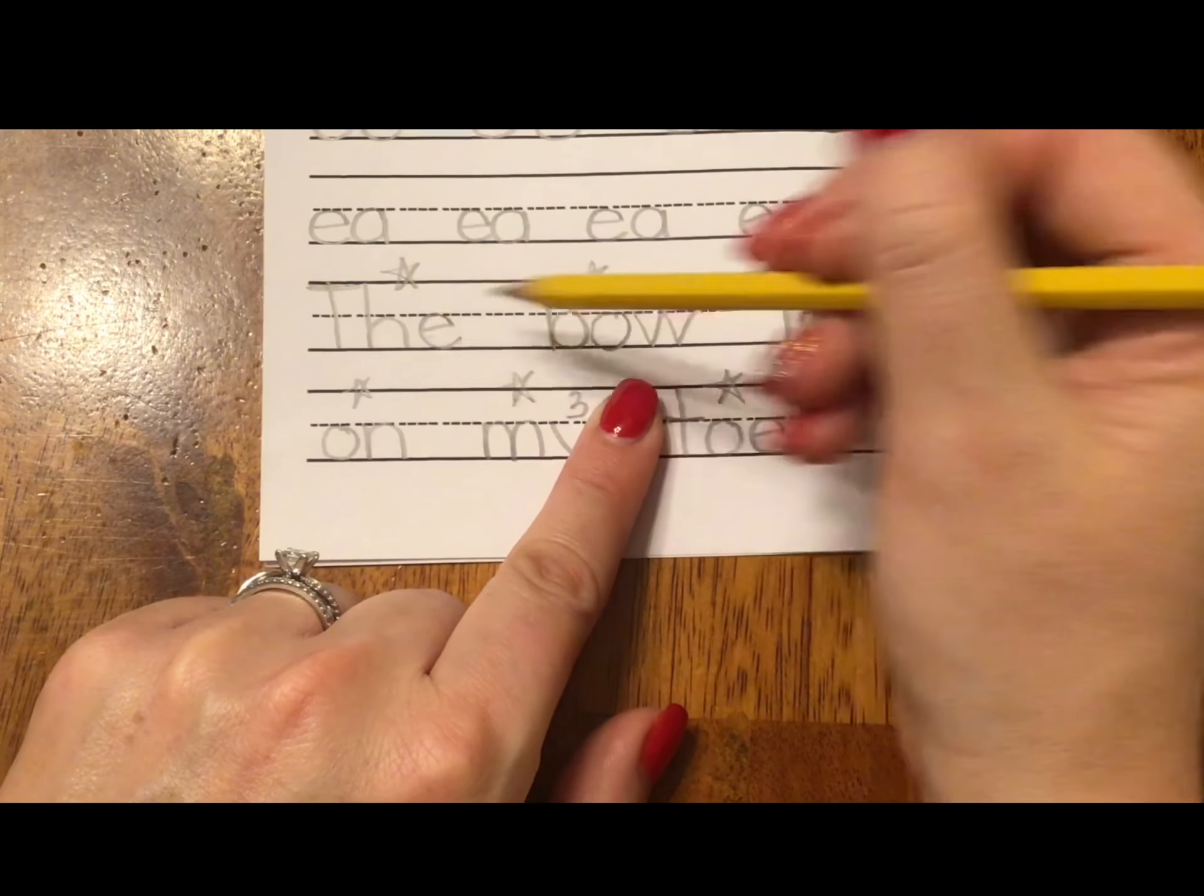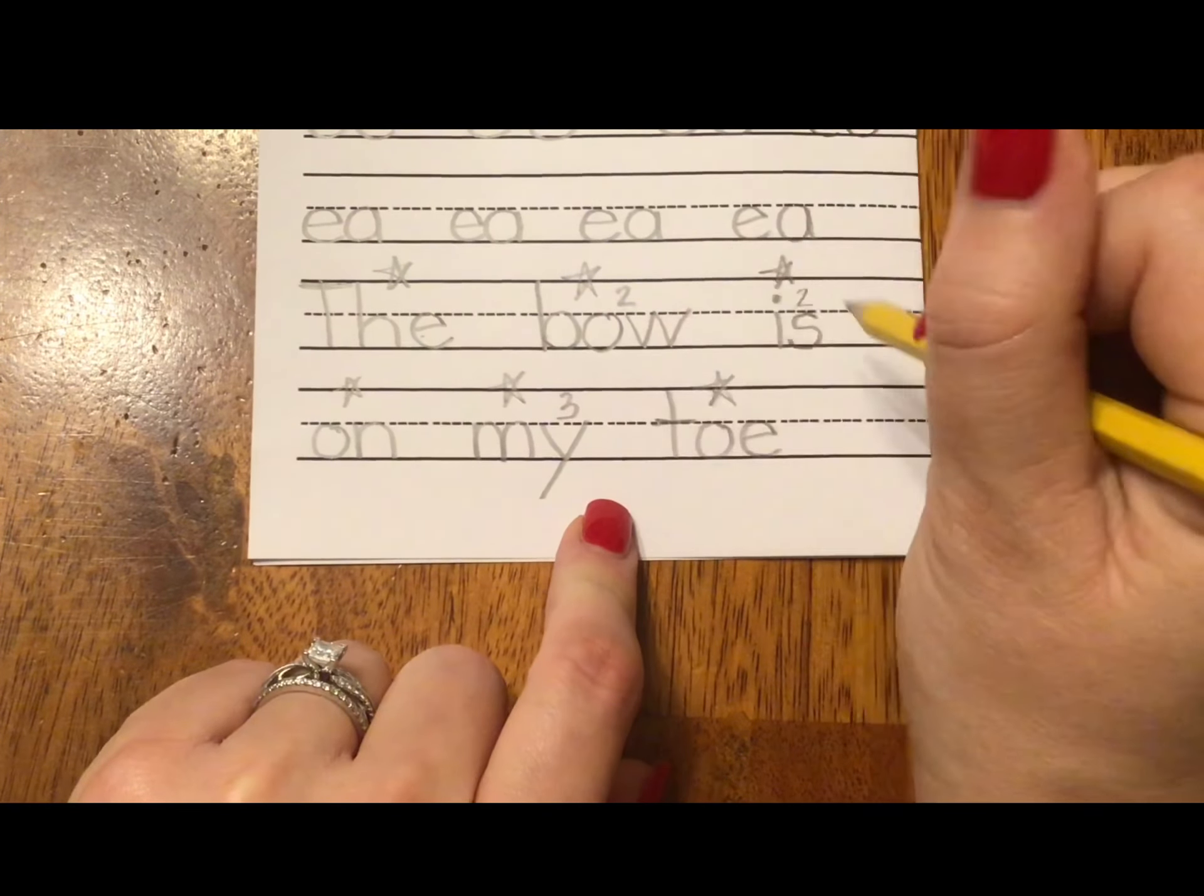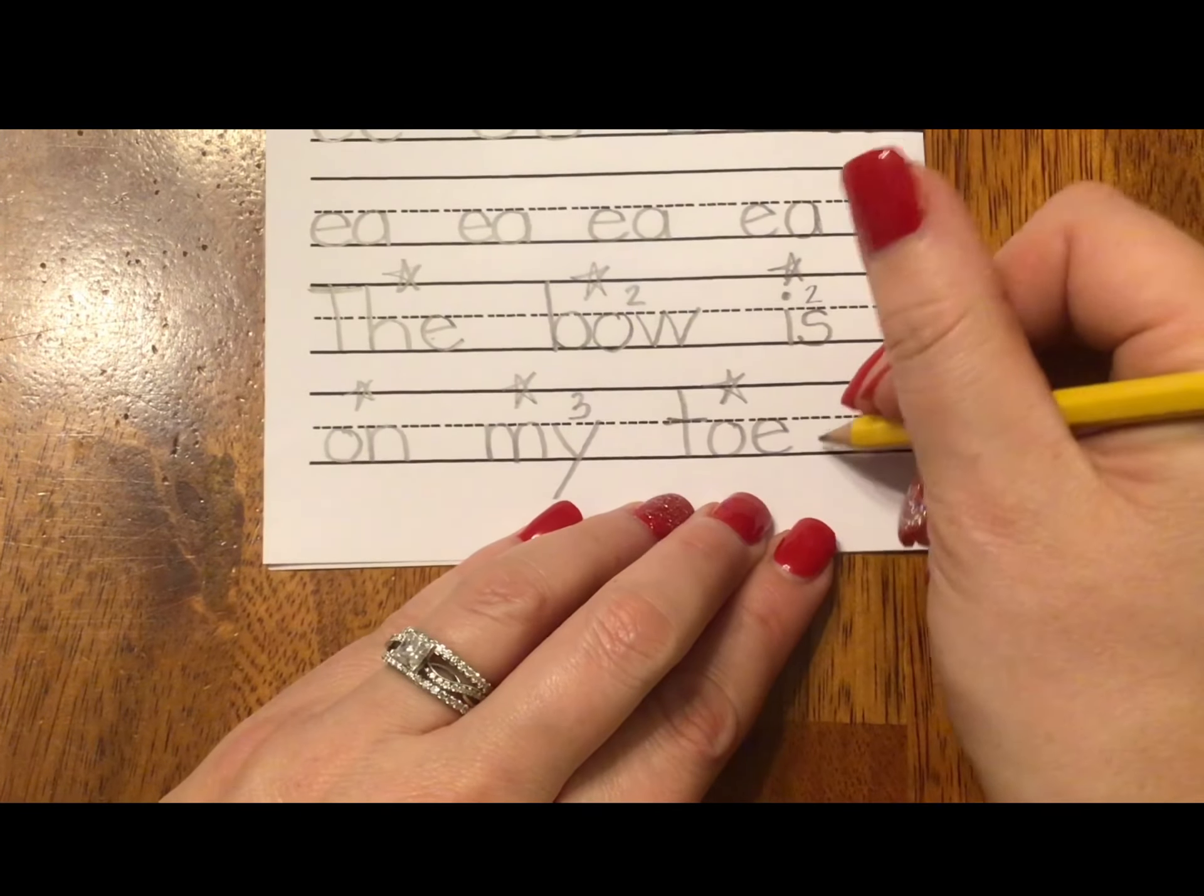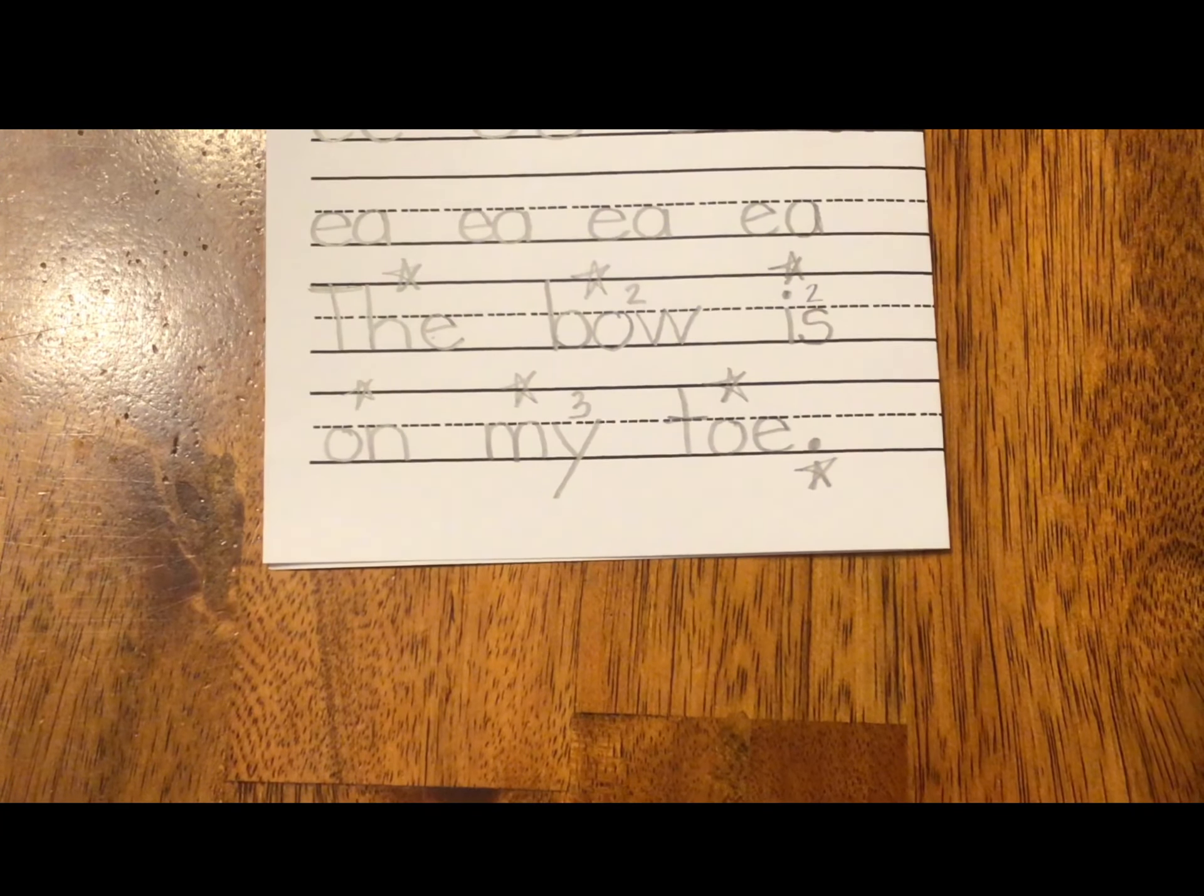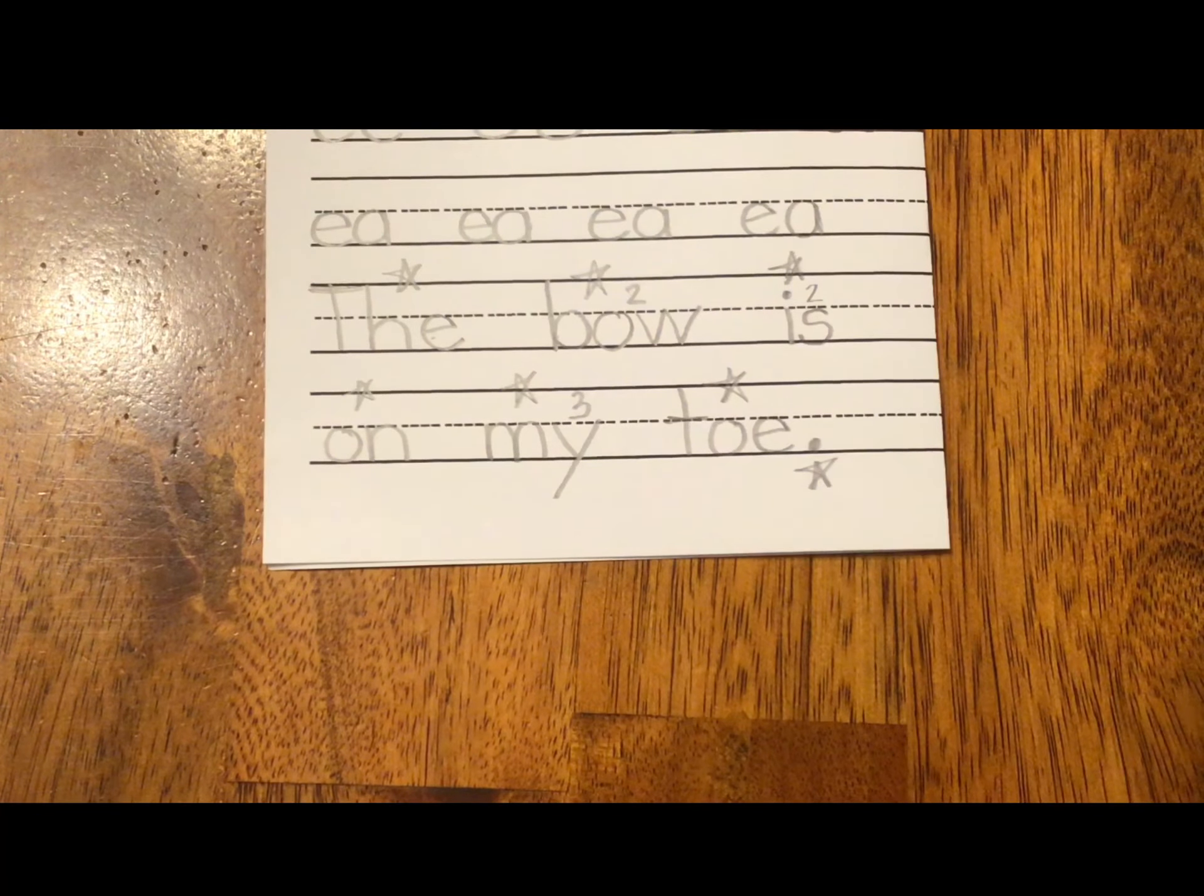Let's double count. The bow is on my toe. So, one, two, three, four, five, six. Yep. And last but not least, this is a regular statement. It should have a period. If you remember to put a small period on the baseline, give yourself a star or a smiley. If not, go ahead and write it now.